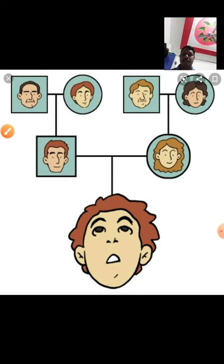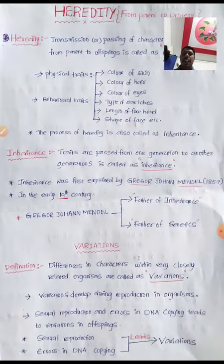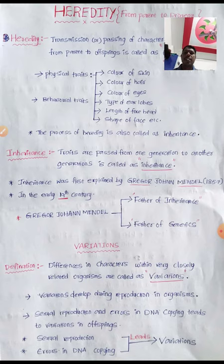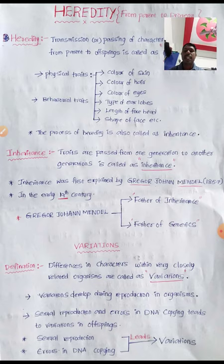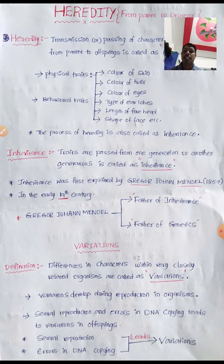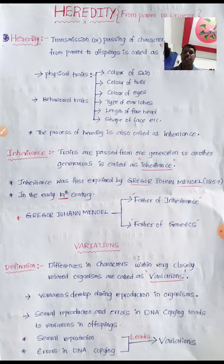How are variations developed? Generally, variations are developed during reproduction in organisms. Sexual reproduction and errors in DNA copying lead to variation in organisms. At the time of sexual reproduction, DNA copying takes place, and errors in the DNA copying lead to variations in human beings.